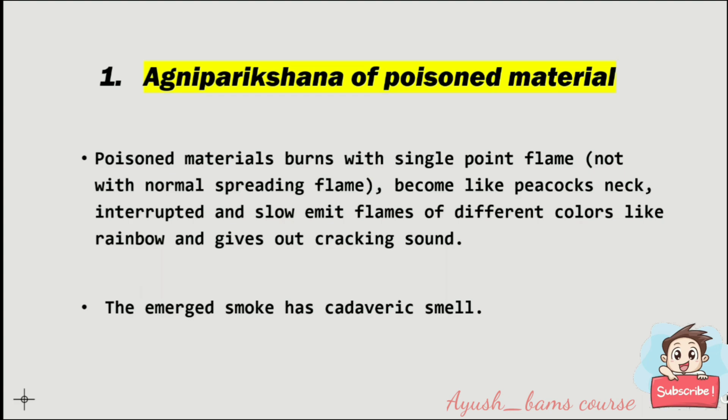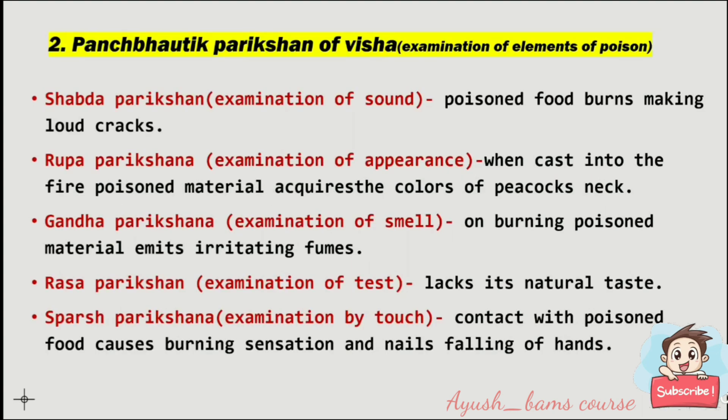Agni parikshana of poisoned material: poisoned material burns with a single-point flame — not with a normal spreading flame, but with a single-point flame. It becomes like a peacock's neck — interrupted and slow. It emits flames of different colors like a rainbow, gives out a cracking sound, and the emergent smoke has a cadaveric smell.